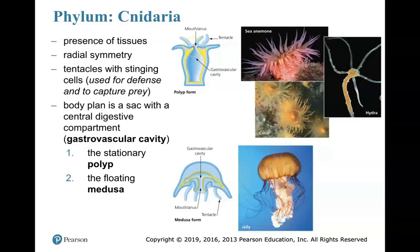Here is an example of the medusa form — a jellyfish. This form is no longer stationary; they can move. Locomotion is achieved using tentacle structures as well as propulsion. We still have that central gastrovascular cavity. The mouth and anus serve both functions in the jellyfish as well, and propulsion is achieved through that opening.